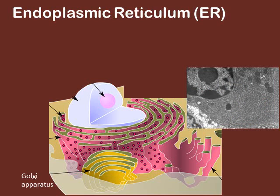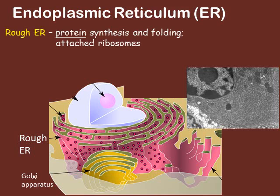The endoplasmic reticulum is divided into two different portions. The first is the rough ER. The rough endoplasmic reticulum is responsible for making proteins — so protein synthesis. Those proteins need to be folded correctly, which is what happens inside those membranes. It's called the rough ER because of the presence of ribosomes, which are the actual units that produce the proteins. These ribosomes, seen here as little dots, give this membrane structure a rough appearance, and they create the proteins and send them inside the membranes to be folded.